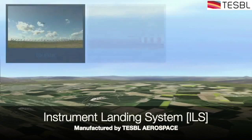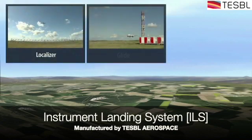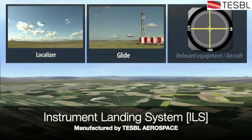The ILS system uses a combination of two independent subsystems: one composed of antennas located on the ground, and one on board the airplanes.